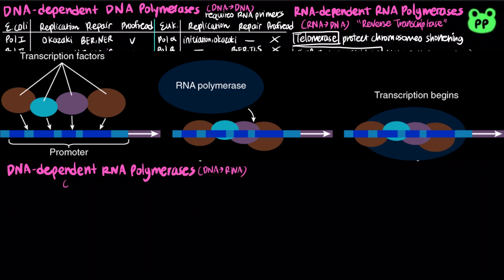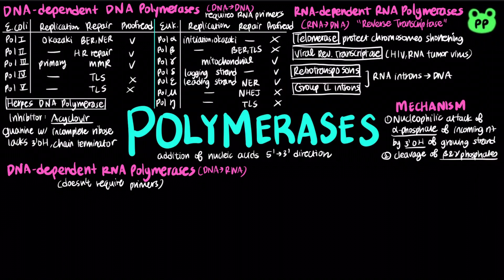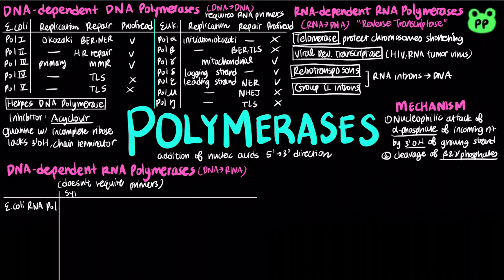DNA-dependent RNA polymerases synthesize RNA molecules from DNA template. They are mainly involved in transcription, and they don't require primers. Bacteria only have one type of RNA polymerase, which synthesizes all three types of RNAs.